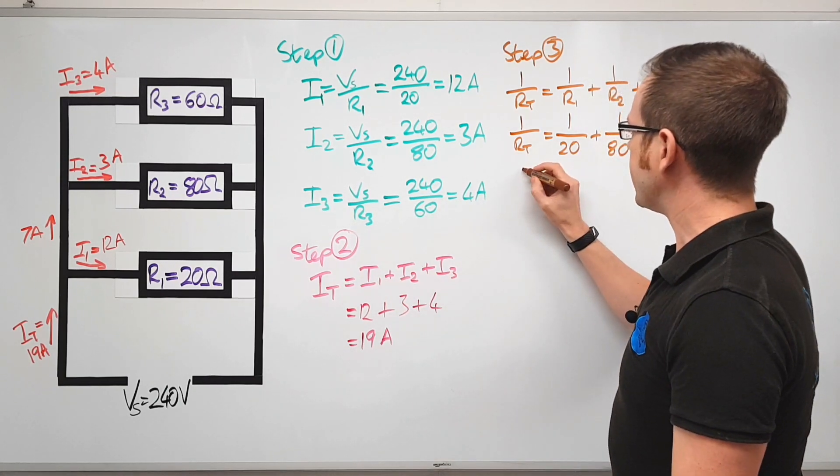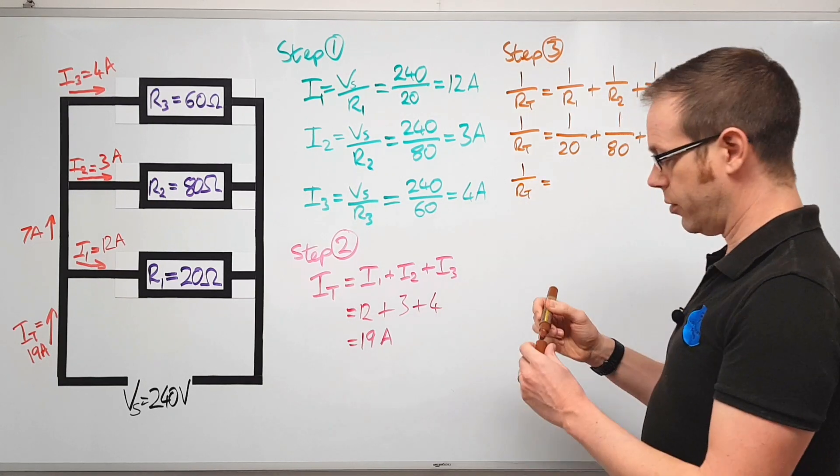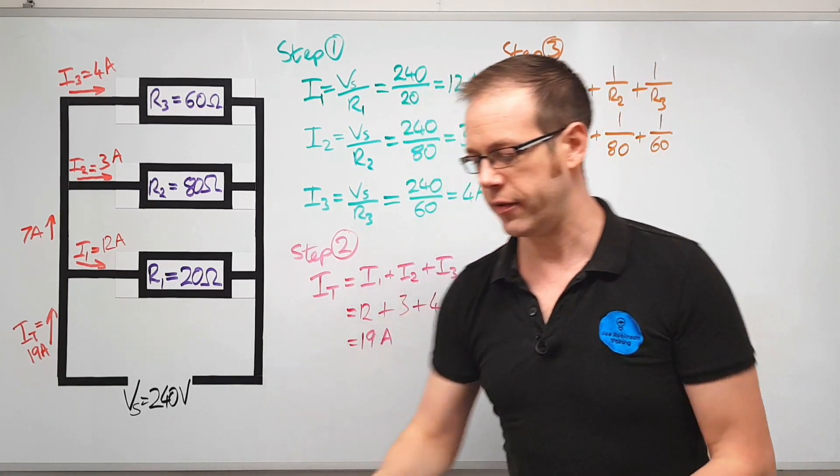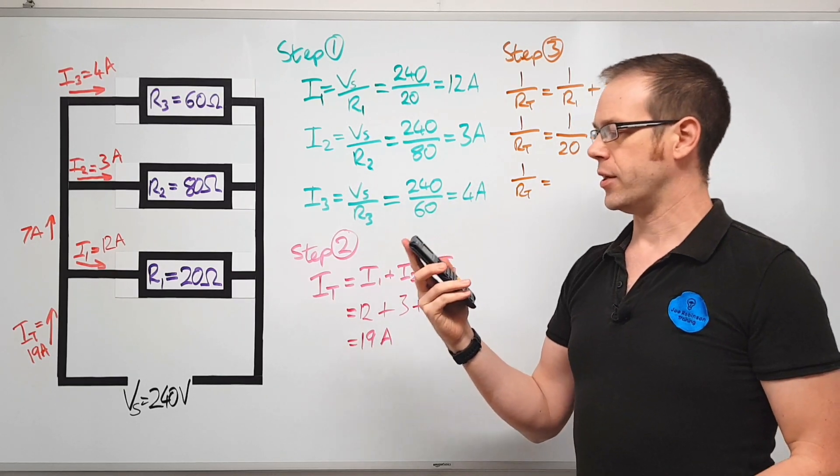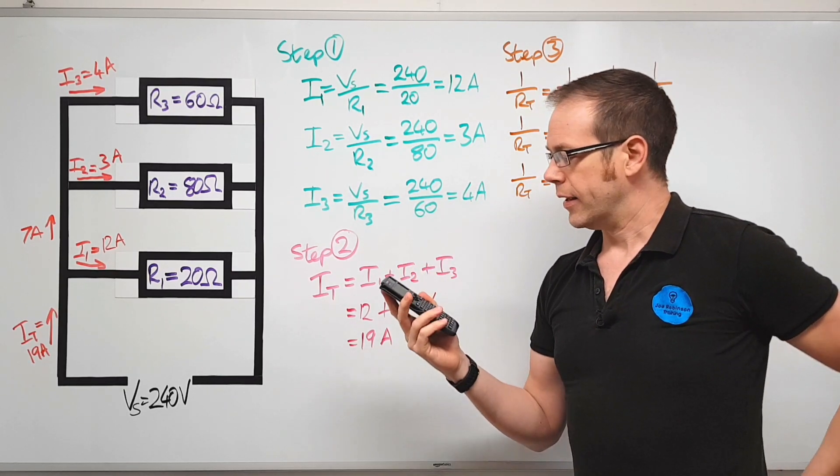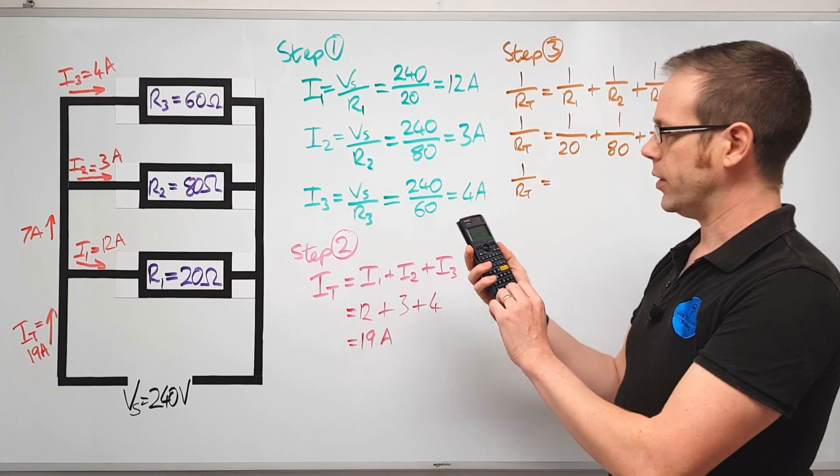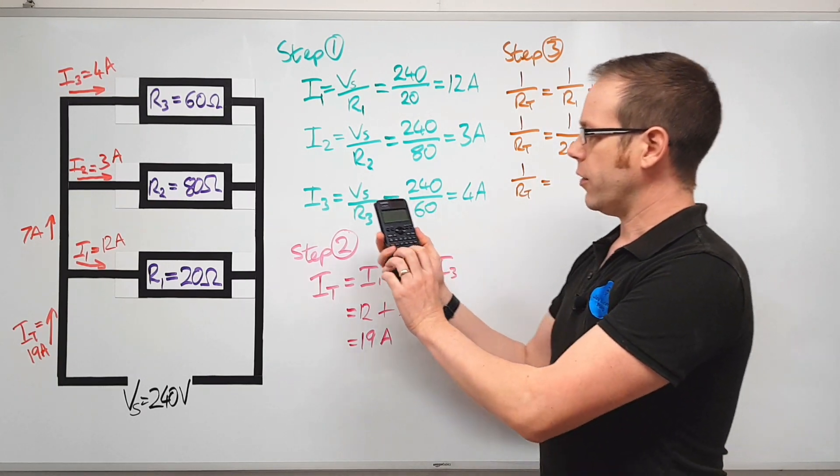So what we're going to say is that one over RT is equal to, and then we're going to use this trick that I've shown you before on the calculator, but I think it's the first time I've shown you on the Casio FX85 GTX. I showed it on my previous calculator but that's gone now. So let's have a look at this.